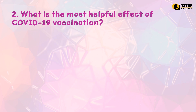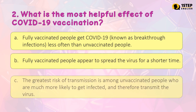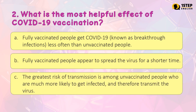Number 2: what is the most helpful effect of COVID-19 vaccination? Letter A: fully vaccinated people get COVID-19, known as breakthrough infections, less often than unvaccinated people. Letter B: fully vaccinated people appear to spread the virus for a shorter time. Letter C: the greatest risk of transmission is among unvaccinated people who are much more likely to get infected and therefore transmit the virus. The correct answer is Letter B: fully vaccinated people appear to spread the virus for a shorter time.